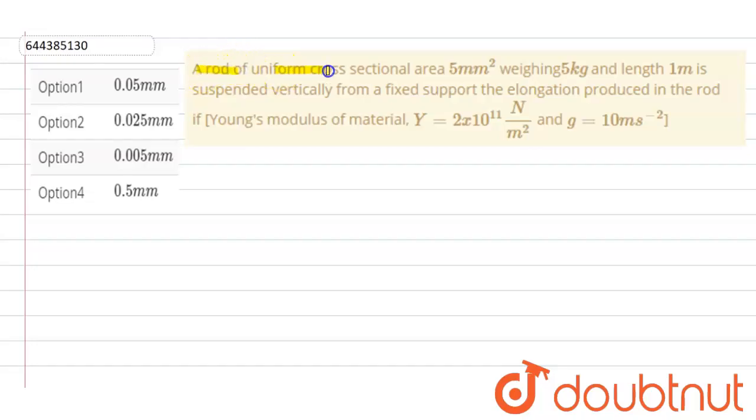A rod of uniform cross-sectional area 5 mm² weighing 5 kg and length 1 meter is suspended vertically from a fixed support. The elongation produced in the rod if Young's modulus is given Y = 2 × 10¹¹ N/m² and take g to be 10 m/s².